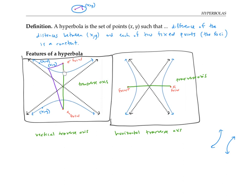If you look at where the transverse axis intersects the blue branches of the hyperbola, you'll find two points called the vertices. The vertices are the two points on the two branches that are closest to one another. The point halfway between the two vertices — also halfway between the two foci — is called the center of the hyperbola. The two black dotted lines forming an X are called the asymptotes; the hyperbola gets closer and closer to them but doesn't cross them.